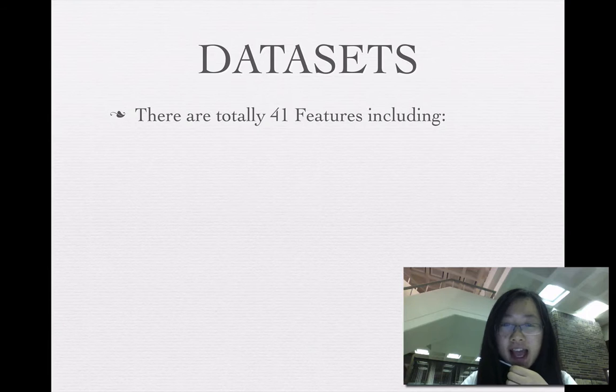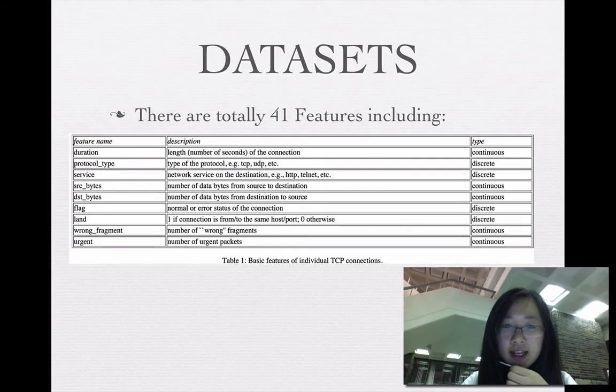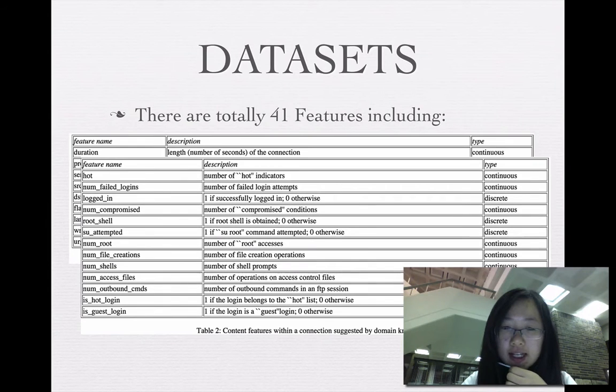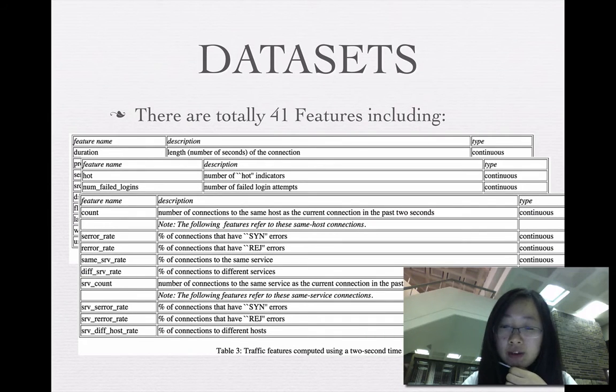And the dataset includes 41 features. It includes basic features of individual TCP connections, content features within a connection suggested by domain knowledge, and traffic features computed using a two-second time window.